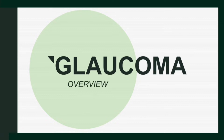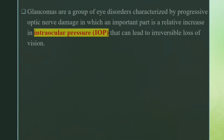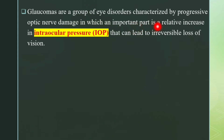In this video we are going to cover glaucoma, just an overview. Glaucomas are a group of eye disorders characterized by progressive optic nerve damage, in which an important part is a relative increase in intraocular pressure (IOP) that can lead to irreversible loss of vision.